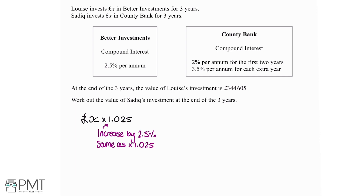We start with our original amount. In one year it's going to go up by 2.5%, because per annum means each year — so 2.5% per year. Multiplying by 1.025 gives the result after one year. We're looking at the end of three years. How compound interest works is that whatever we have after the first year, including the original amount and the interest, we then get 2.5% the next year on all of that.